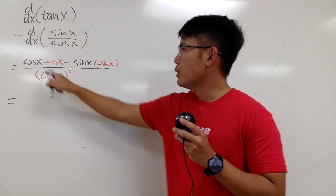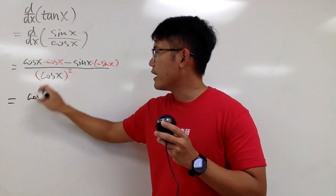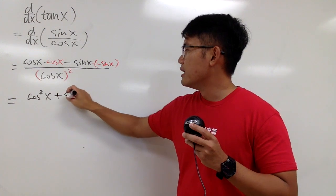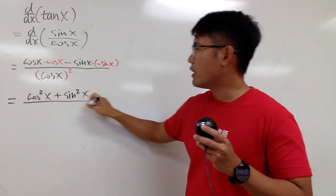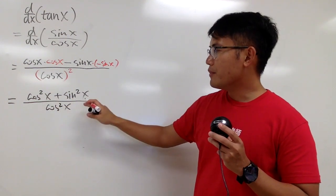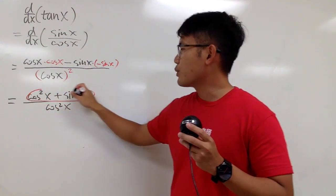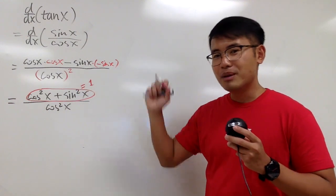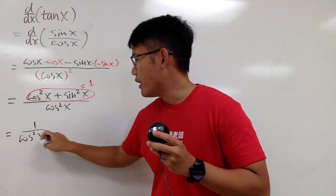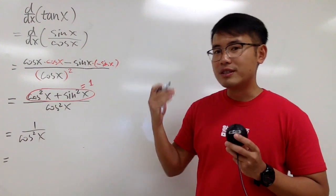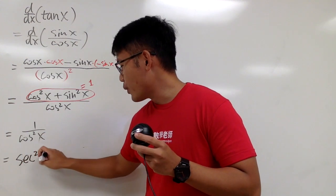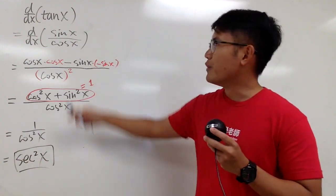We can continue: cosine x times cosine x gives us cosine squared x. Then minus minus gives us plus, and sine x times sine x gives us sine squared x. All of this is over cosine squared x. The beauty of this is that on the top, cosine squared x plus sine squared x equals 1 — the famous Pythagorean identity. So we just have 1 over cosine squared x, which is secant squared x. This is the derivative of tangent x.